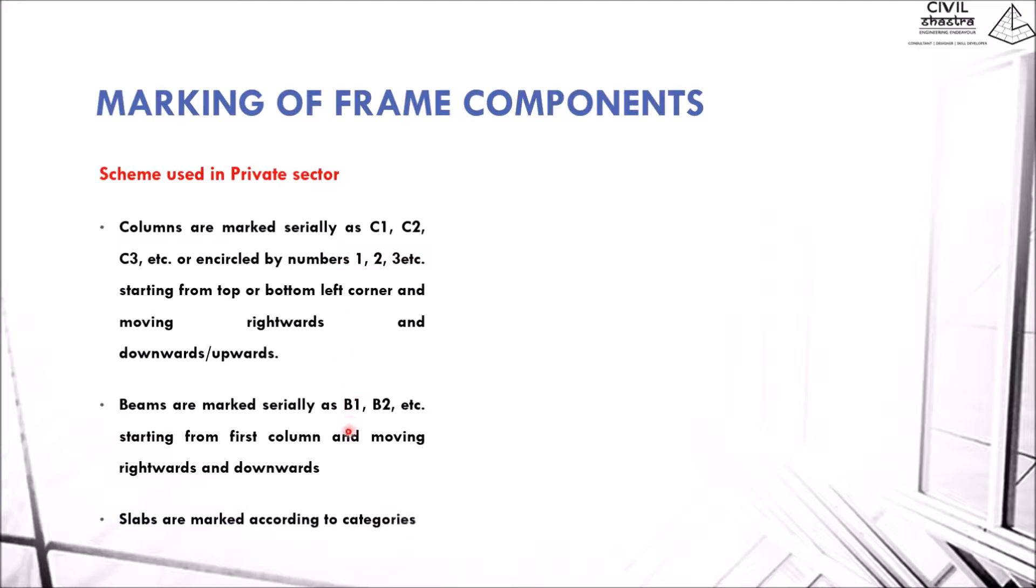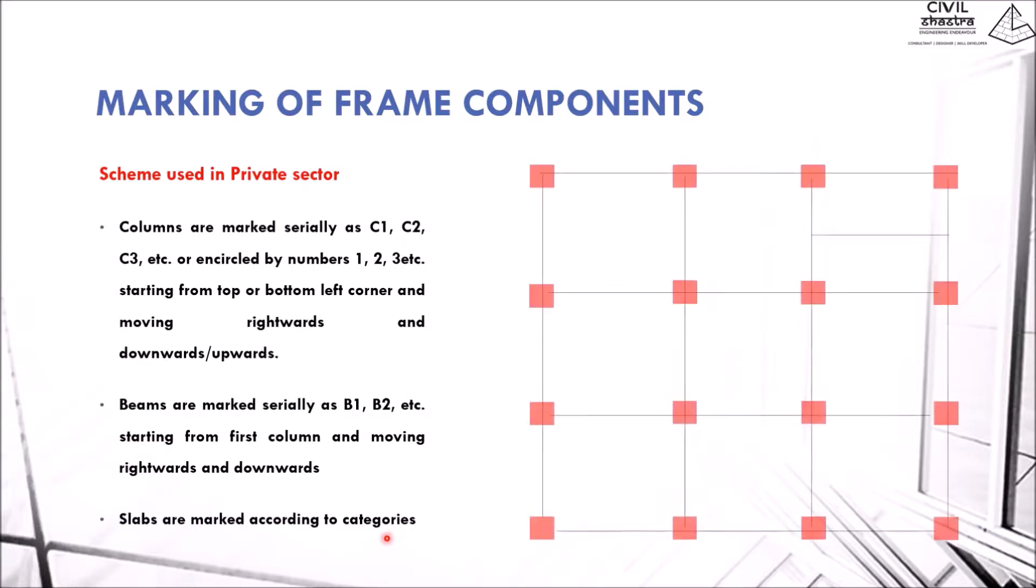Beams are marked serially as B1, B2, and so on, starting from the first column. Slabs are marked according to the categories. Let us take a standard plan with 16 columns. We'll start from the top left corner with numbering, going rightwards and then moving downwards in a zigzag pattern: 5, 6, 7, 8, then down again, 9, 10, 11, 12, again down, 13, 14, 15, 16. This pattern is easier to read since we are used to reading from left to right and then down.